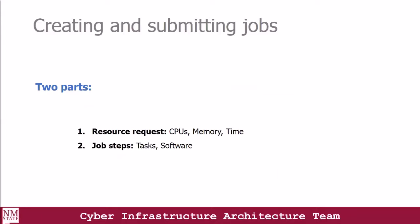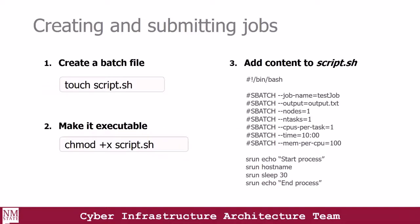In order to create jobs, there are two important parts of your job script. The first part is the resource request — the amount of resources required for your job to run. The second part is the job steps, where you specify the tasks to be carried out and the software to execute. Before you submit a job for processing, it's important to know what the requirements of your program are. We're creating our batch file and making it executable so it can be recognized by the shell system.